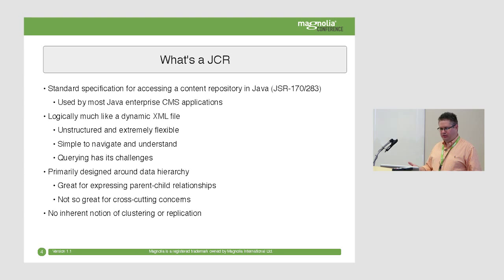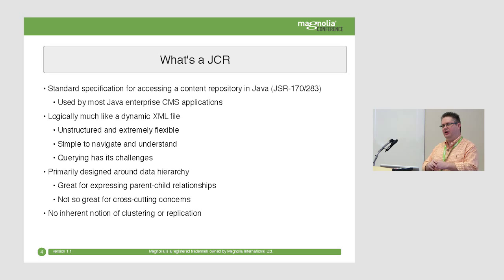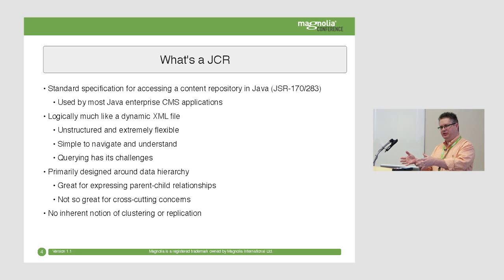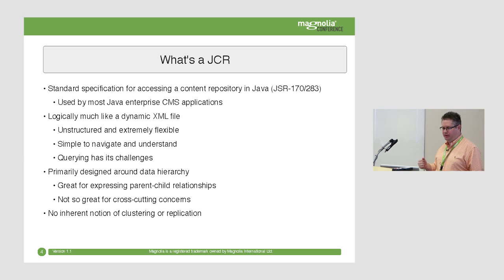JCR implementations don't typically have any notion of clustering or replication. With a normal database you'd have a write master and read slaves. JCRs don't typically do this. If you've used Magnolia, you know there's an author instance with a copy of the JCR and pub instances with their own copies. When you want to move data from one to the other, the application itself has to tell the other version to put new data in its JCR. JCRs are a wonderful solution for certain classes of problems, but not necessarily great for every kind of problem.